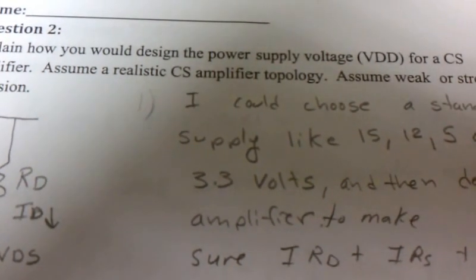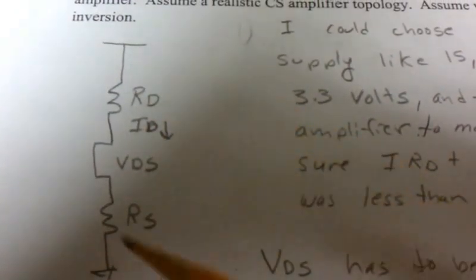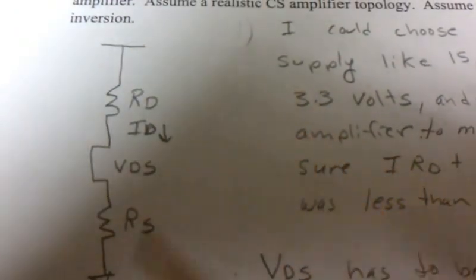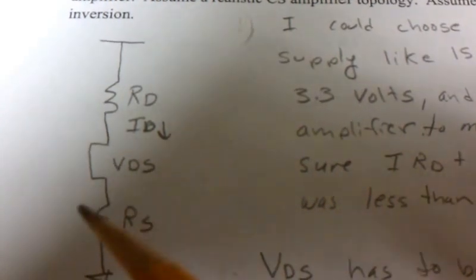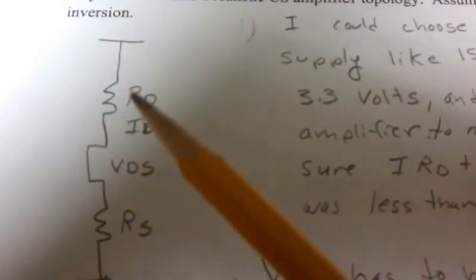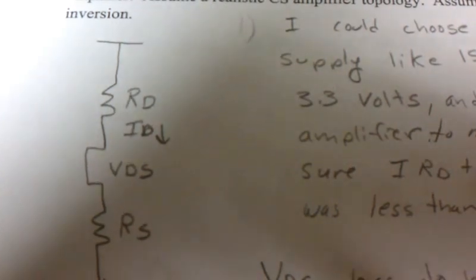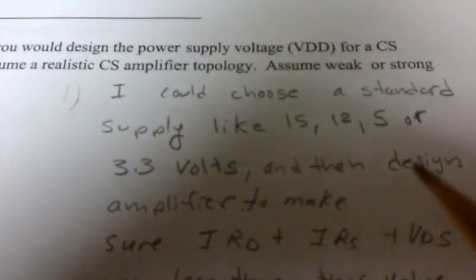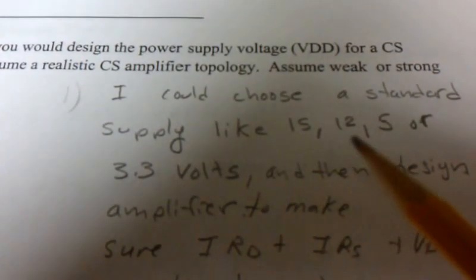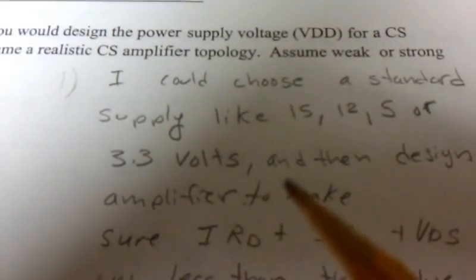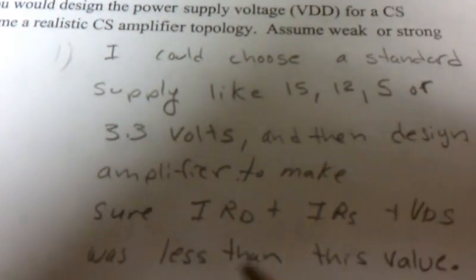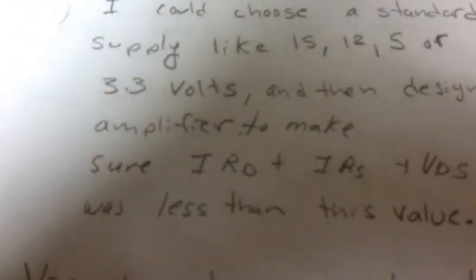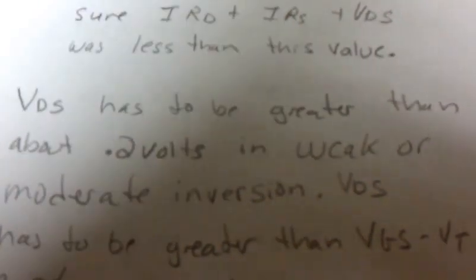For a common source amplifier, really all we're looking at is how large to make VDD. You can see that we have a current drop across this biasing resistor and this biasing resistor, and then we have VDS. You could start with a supply of 15, 12, 5, or 3.3 volts—a standard supply—and then make sure that all of these values fall within that value.